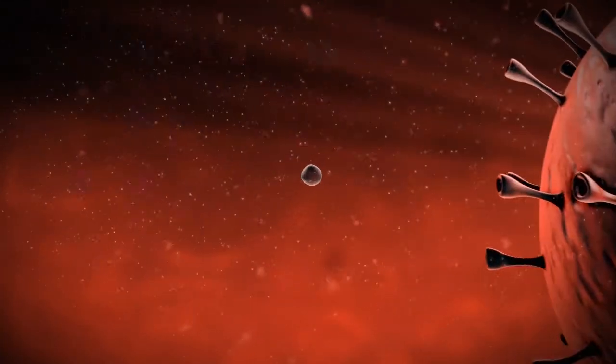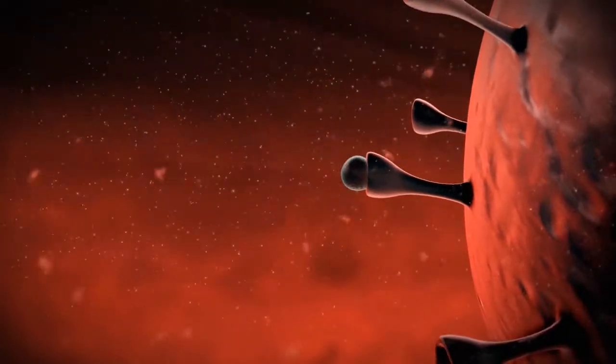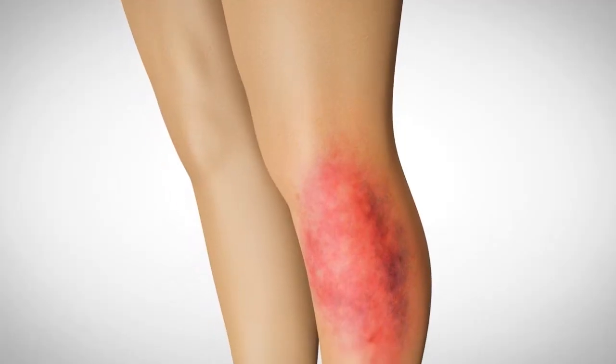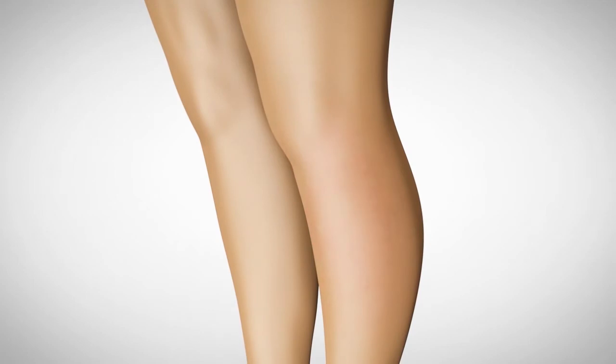PLX cells grown with Pluristem's 3D technology are barcoded during their manufacturing process, which allows the company to fully protect their intellectual property.